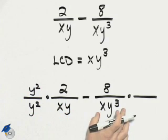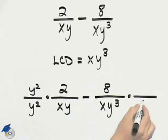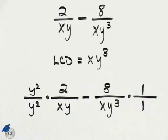Over here, we have xy cubed, which is our least common denominator, and so I just simply multiply by 1 and 1.